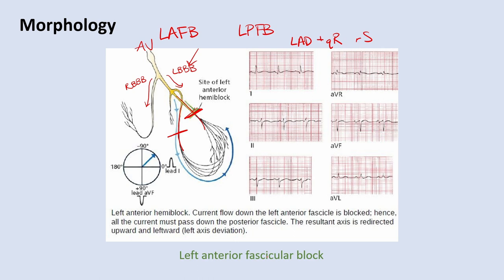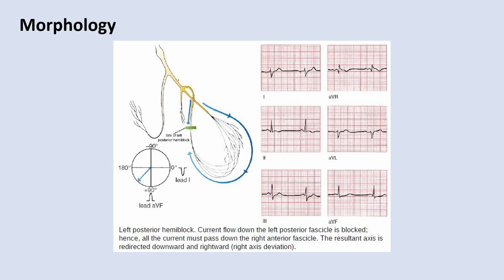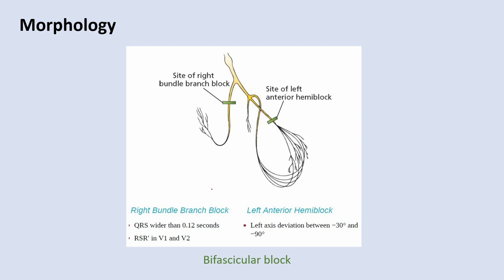For left posterior fascicular block, you're blocking the posterior fascicle. You'll see right axis deviation — thumbs down in lead 1, thumbs up in lead 2. In the lateral leads, look for a small R and big S wave, and in the inferior leads, a Q and big R. A bifascicular block is a left anterior or posterior hemiblock plus a right bundle branch block — evidence that the patient is developing more and more conduction disease.